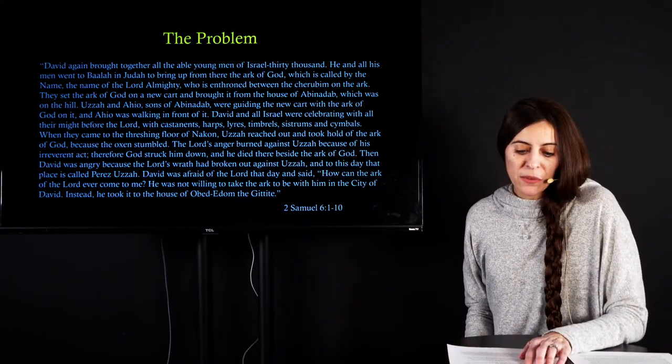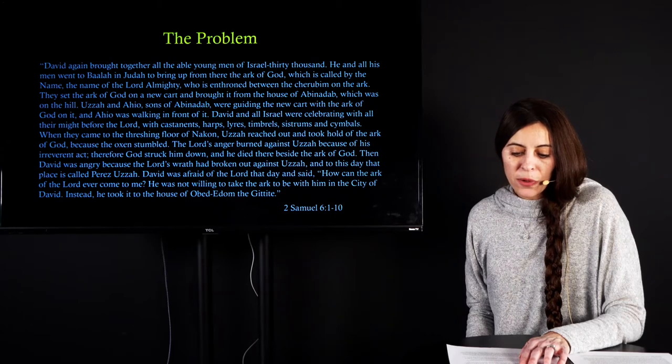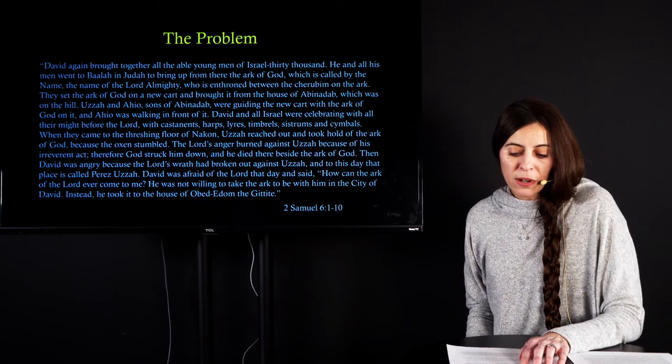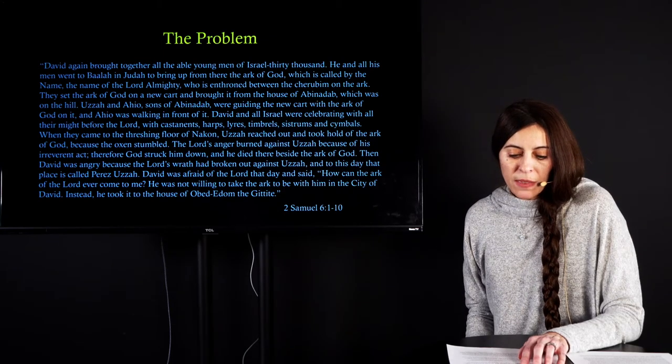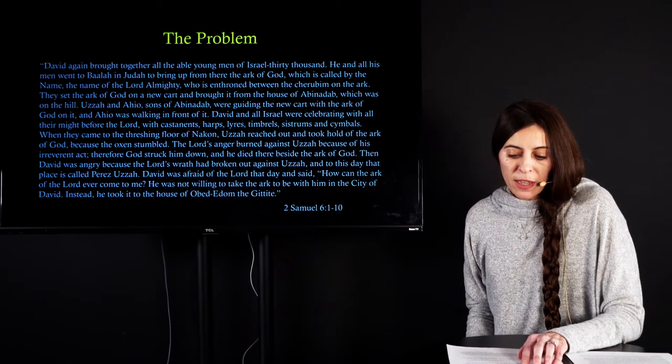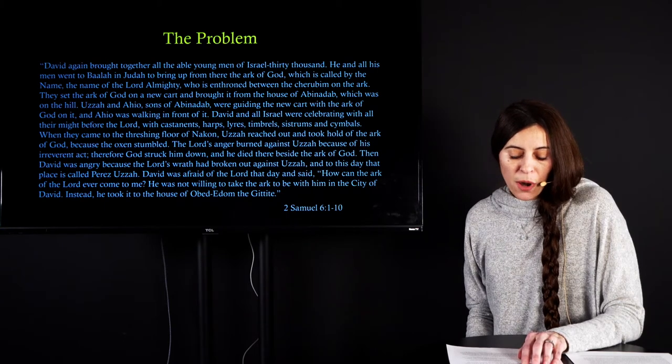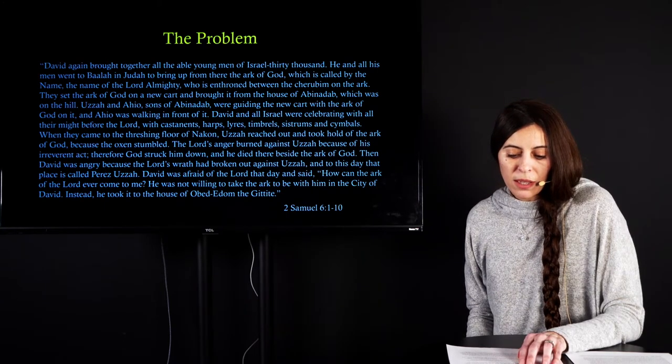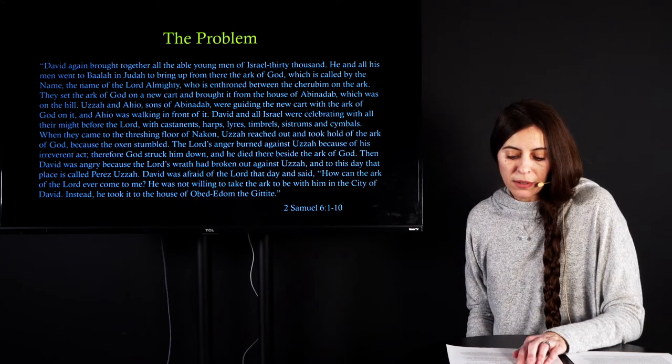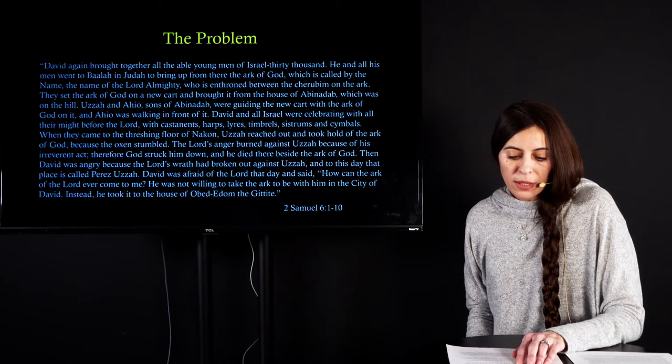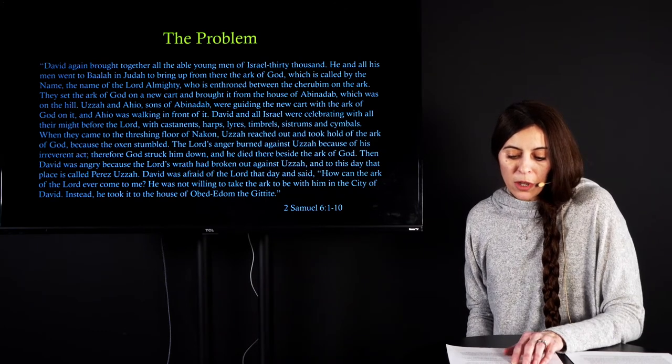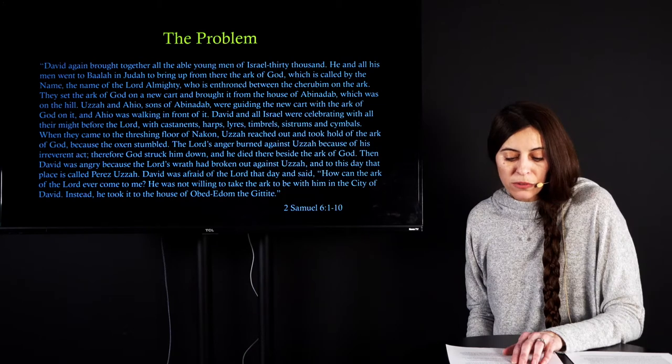David wants to get this Ark because he sees its presence as life-giving. So we're just going to read here. David again brought together all the able young men of Israel, 30,000. He and all his men went to Bala and Judah to bring up from there the Ark of God, which is called by the name, the name of the Lord, Almighty, who was enthroned between the cherubim on the Ark. They set the Ark of God on a new cart and brought it from the house of Abinadab, which was on the hill. Uzzah, Ohio, sons of Abinadab, were guiding the new cart with the Ark of God on it. And Ohio was walking in front of it.